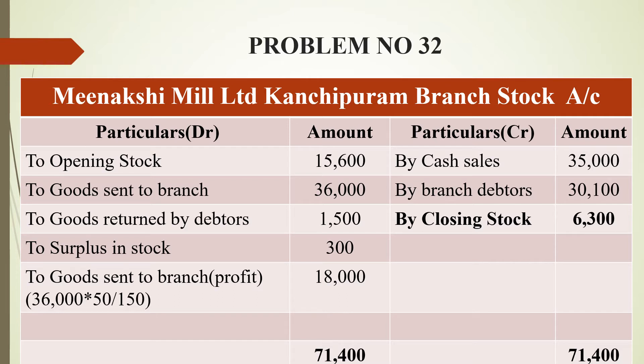The goods sent to branch figure (in bracket) is calculated as 36,000 × 50/150 = 18,000. Next, goods returned by debtors are recorded because they represent expenses — damage or low quality goods, which is a degrade for the business.